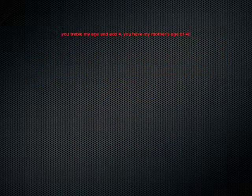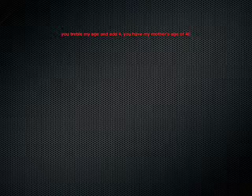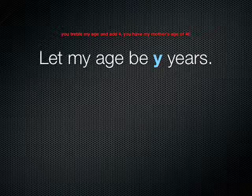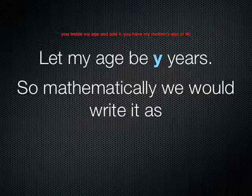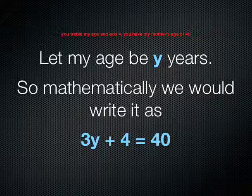Let's work that through. You treble my age and add 4, you have my mother's age of 40. As we have to apply letters for the unknown, in this case we will use the letter y. So let my age be y years, and mathematically we would therefore write it as 3y plus 4 equals 40. Why is that? The age, which we don't know, we're trebling that age, and we're adding 4, and we're getting 40.